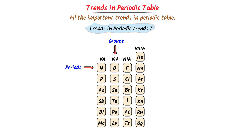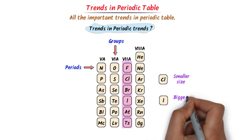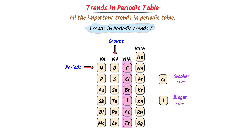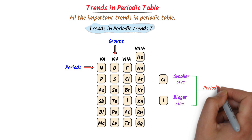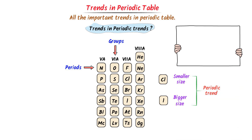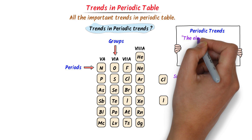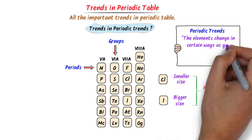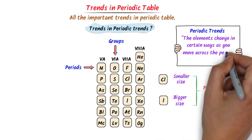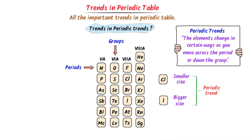For example, in the seventh group, chlorine has smaller size than iodine. This difference in size of chlorine and iodine is called a periodic trend. Thus we define periodic trends as the elements changing in certain ways as you move across the period or down the group. This change is called periodic trends.